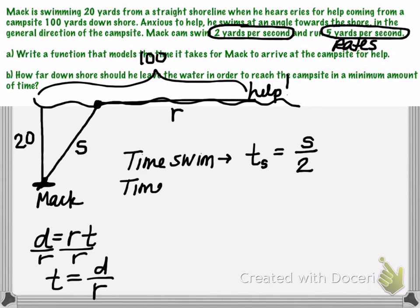Now let's do the same thing for the time that he's going to spend running. So I'll use that subscript of a little r. The time spent running will be his distance that he runs, which is r, divided by how fast he runs, his rate, which was 5 yards per second.